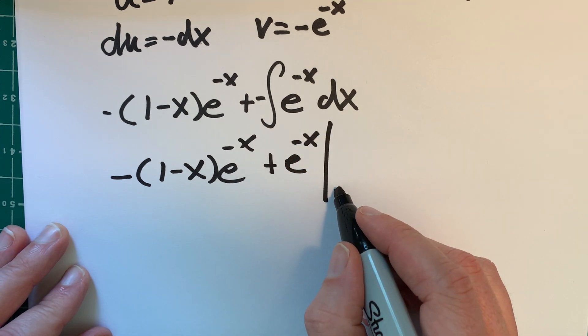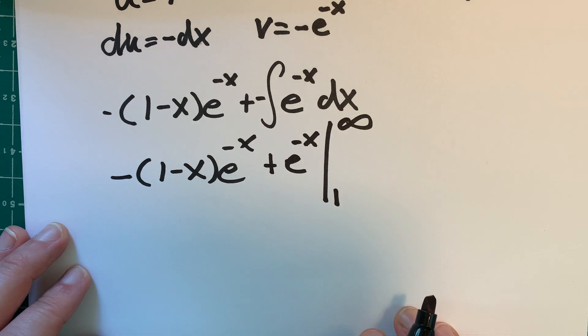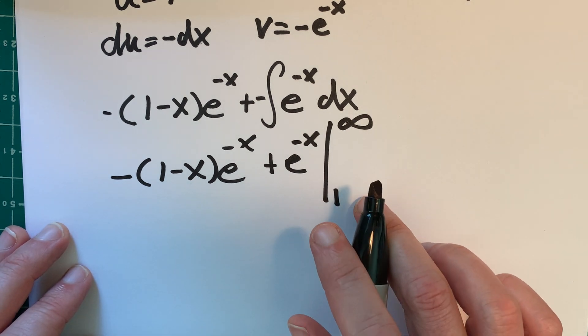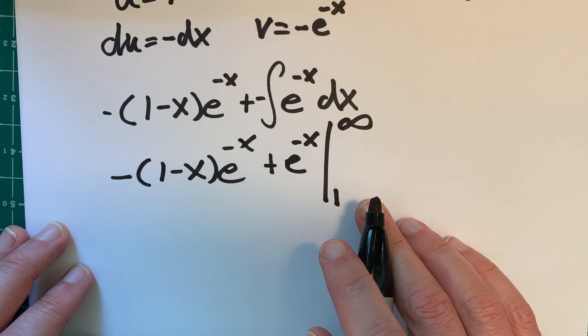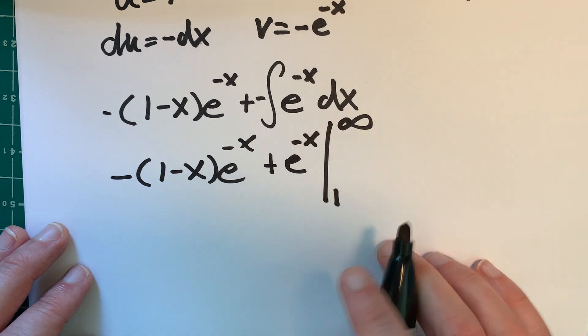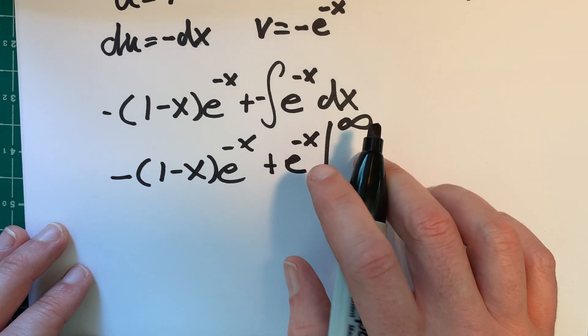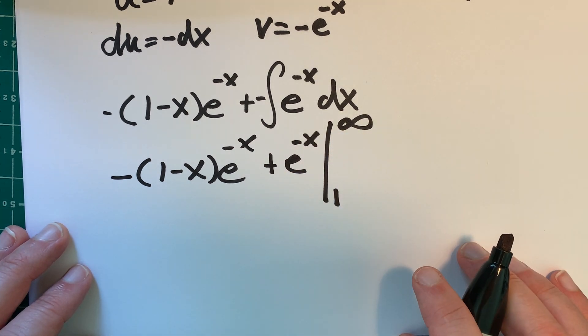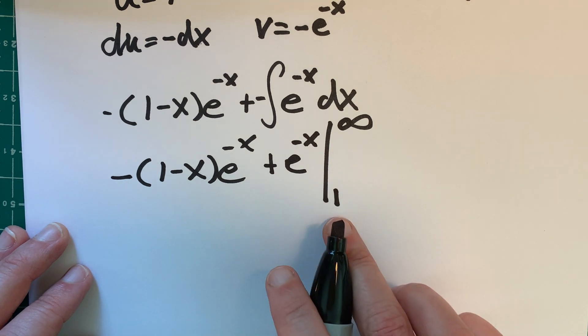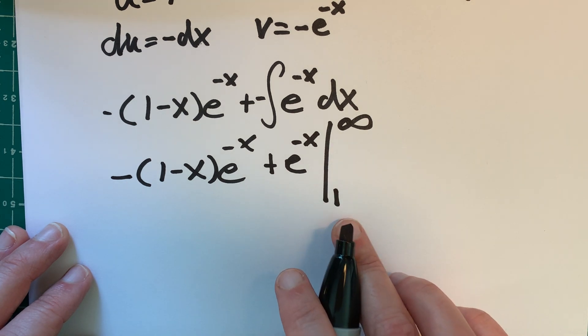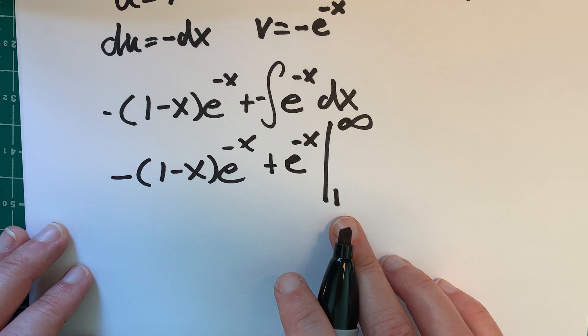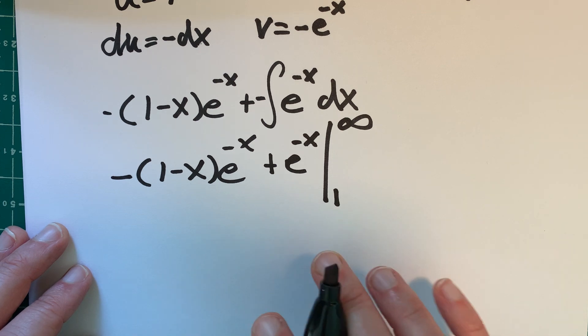And we need to evaluate this from 1 to infinity. So I guess you would call this an improper integral, because we have to go all the way to infinity. And the only way I know how to do that is to take the limit. So that's what I'm going to do. The other way is really easy. We just plug in 1. So maybe I'll just plug in 1 now, so I kind of know what it is and what I'm dealing with.